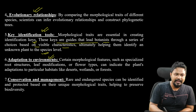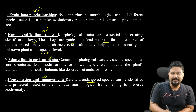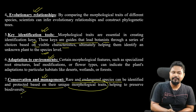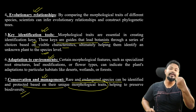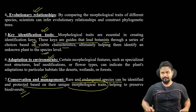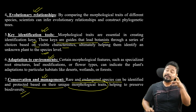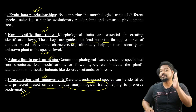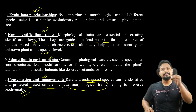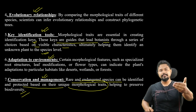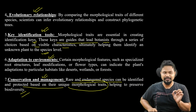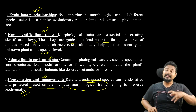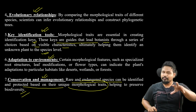Finally, conservation and management. Rare and endangered species can be identified and protected based on their unique morphological traits, helping to preserve biodiversity. For example, if an adult plant has unique morphological traits, that uniqueness is very important because it may give us insight into the evolutionary processes of that plant. Unique morphological traits help us conserve and manage such species.